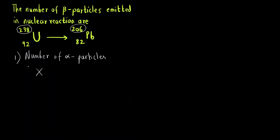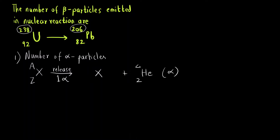Suppose there is an element X with atomic mass A and atomic number Z. If one alpha particle is removed — an alpha particle is nothing but a helium nucleus, which has atomic number 2 and atomic mass number 4 — then the atomic mass decreases by 4 and the atomic number decreases by 2 units.